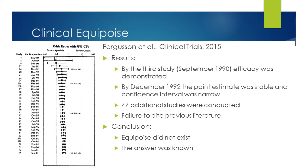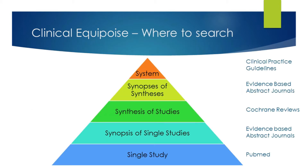How do we establish clinical equipoise? There are different resources we can use. As I mentioned at the start when discussing evidence-based practice, most of the evidence we get for clinical practice now comes from scientific and medical journals rather than textbooks. Similarly, to establish clinical equipoise, we have to look at published research studies using resources like PubMed or other databases. We can also look at synopses of single studies published in evidence-based abstract journals.